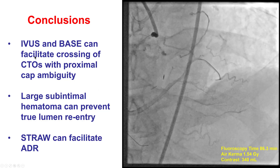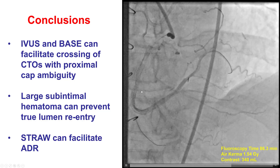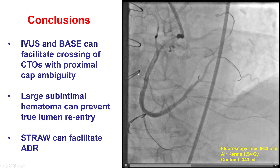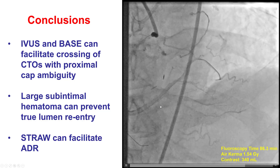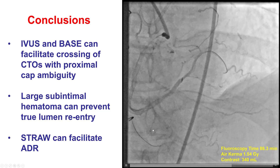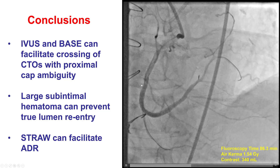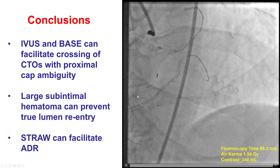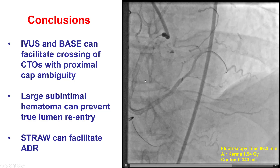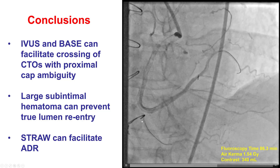Several lessons from this case. The first: during antegrade dissection re-entry, it is possible for wires — even if knuckled — to go into side branches. In this particular case, our wires went into the first side branch at the proximal cap, but also into a second acute marginal distal to the proximal cap. To overcome this difficulty, we used the side-based technique: balloon inflated halfway in, halfway out, and then another knuckle wire advanced that goes around the side branch to the distal right coronary artery.